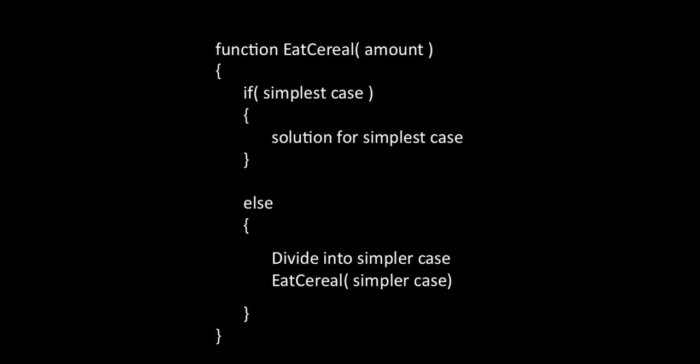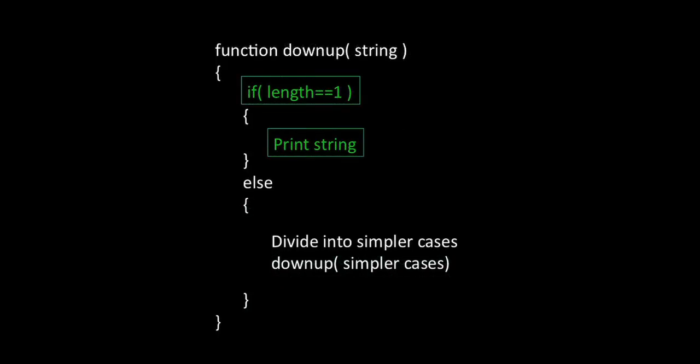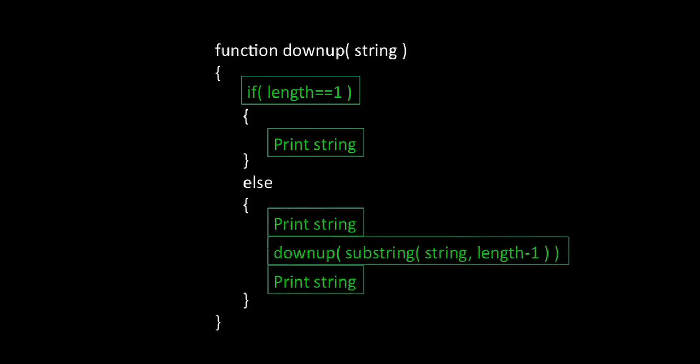Recall the general framework for a recursive solution: tell the computer how to solve the simplest problem, then break the problem into simpler pieces until we reach the simplest problem. If the string is a single letter, print it. Otherwise, print the string, solve for downup of the string one character shorter, and print the string again. Try now, if you haven't already done so, to frame the problem in a more iterative manner. Pause the video to discuss.